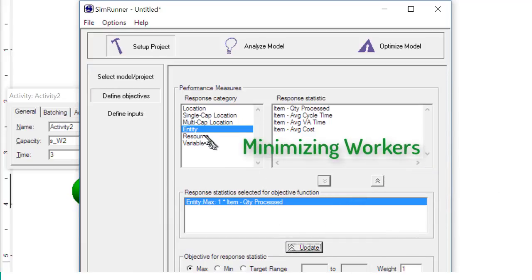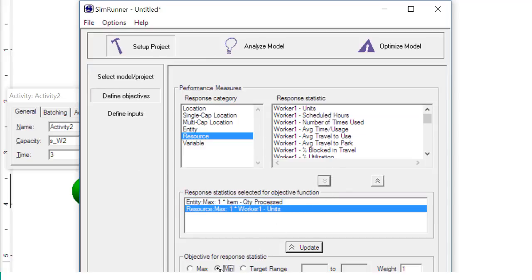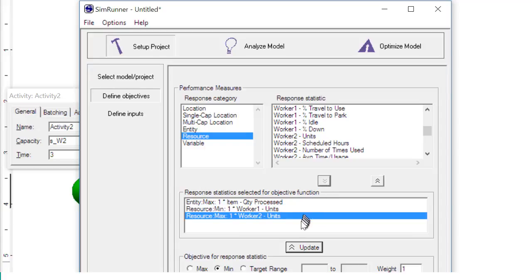Resources are required for production of this item. Part of our goal is to minimize the number of resources. Under the category, select resource. Under the statistic, select worker one units and move the selection into the goal. Select minimize. We want to minimize the number of workers and update. Do the same for worker two.